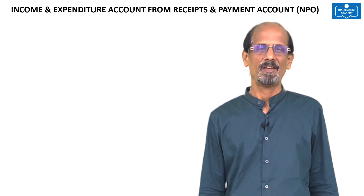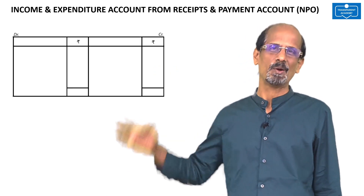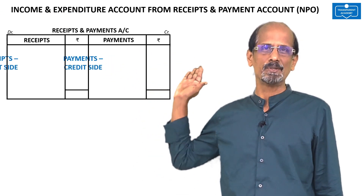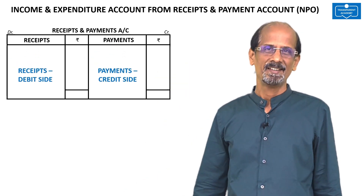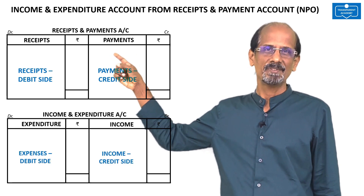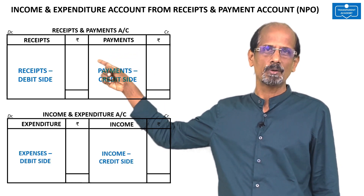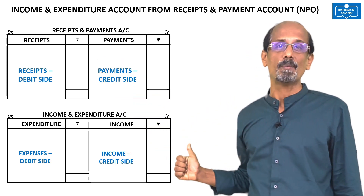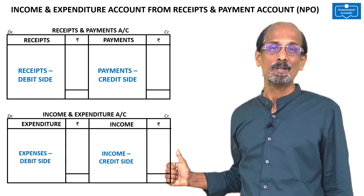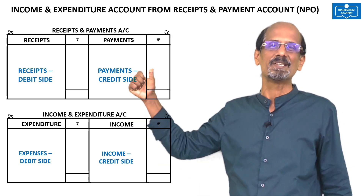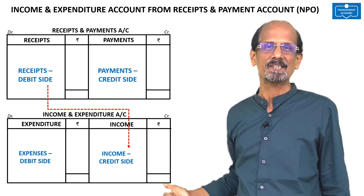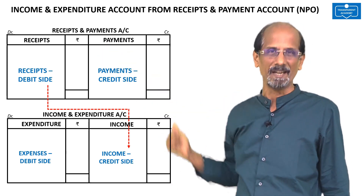If you are given a receipts and payments account, there will be receipts on the debit side and payments on the credit side. Posting will be done from the debit side of receipts and payments account to the credit of income and expenditure account, because all incomes will be credited in the income and expenditure account and income arises from receipts. So, from the debit side of receipts and payments account to the credit side of income and expenditure account — receipts to income.